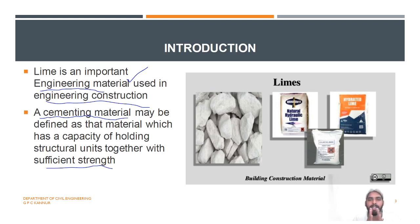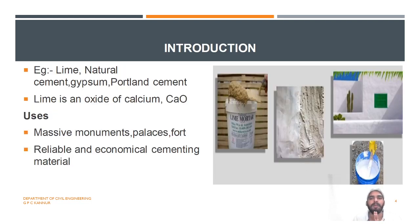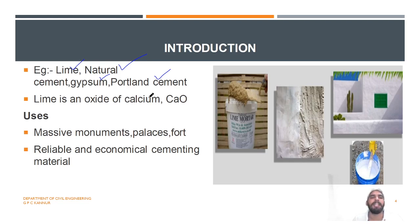Lime is available in different forms — simply lime, natural cements, gypsum, and portland cement also contain lime. Lime is a primary constituent in everything. Simply, lime means calcium oxide. It is an oxide of calcium.